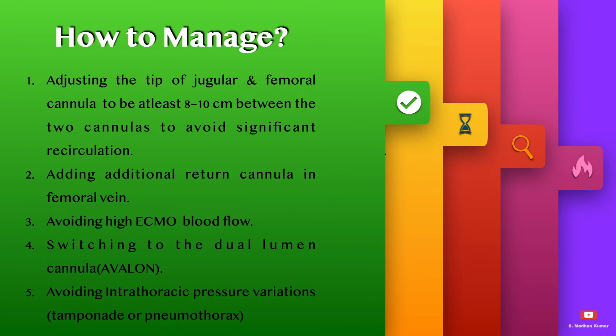How to manage recirculation: it can be managed by adjusting the tip of the jugular and femoral cannula to be at least 8 to 10 centimeters apart between the two cannulas to avoid significant recirculation. This can be confirmed with imaging. Additional options include adding an additional return cannula in the femoral vein, avoiding high ECMO blood flows more than required, switching to a dual lumen cannula — for example, Avalon — to reduce the recirculation factor, and avoiding intrathoracic pressure variations which can cause tamponade or pneumothorax.